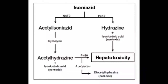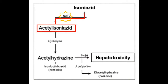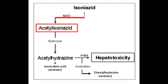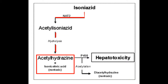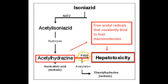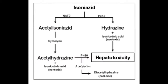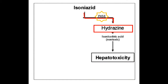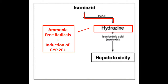So how does isoniazid cause liver injury? Unfortunately, the exact mechanism is not completely understood. Isoniazid has two possible routes of metabolism. In the primary pathway, N-acetyltransferase acetylates isoniazid to the intermediate acetyl isoniazid, which is then hydrolyzed to acetylhydrazine and non-toxic isonicotinic acid. Further oxidation by cytochrome P450 of acetylhydrazine causes free acetyl radicals that covalently bind to liver macromolecules, leading to hepatocellular necrosis. In the secondary pathway, cytochrome P450 oxidizes isoniazid to the toxic metabolite hydrazine, which can be metabolized to ammonia and free radicals and causes induction of cytochrome P2E1, leading to more toxic metabolites.